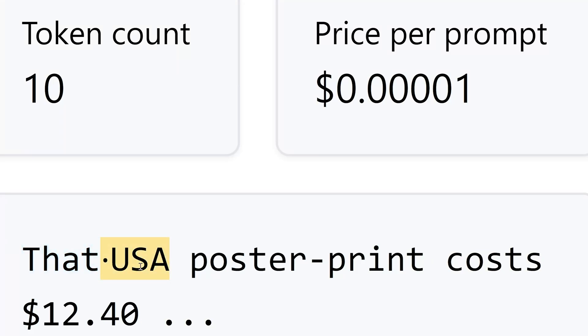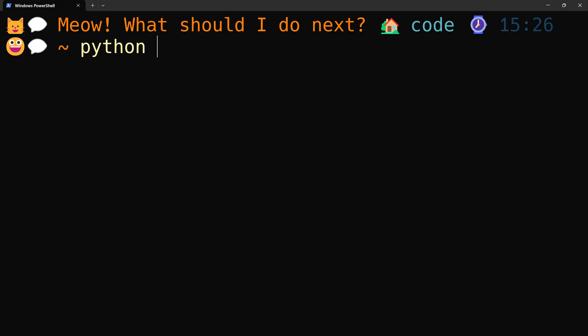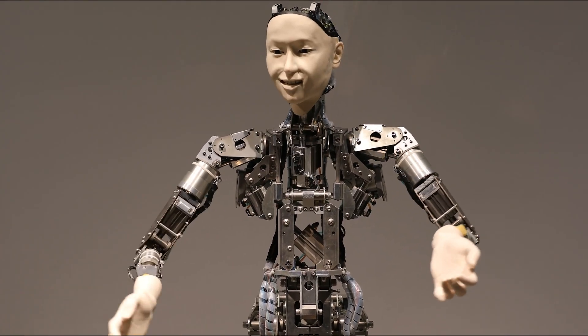The prompt 'USA poster print cost 12 dollars and 40 cents' can be recognized by tokens with different colors. To do that, we can use regular expressions to identify them. There you go.